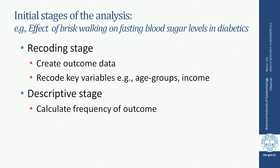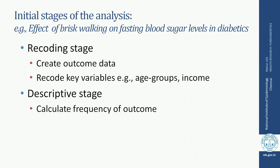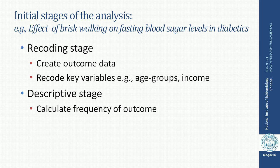As an example, we talked about exercise and diabetics. In the initial stages of analysis, we will recode the data — creating an outcome variable around blood sugar levels, grouped into positive outcome (reduced blood sugar level) and negative outcome (blood sugar not reduced). We may also recode key variables such as age groups, income levels (below poverty line, above poverty line), and exercise categories (mild, moderate, heavy, or no exercise). Then in the descriptive stage, we calculate the frequency of the outcome by each of these groups.